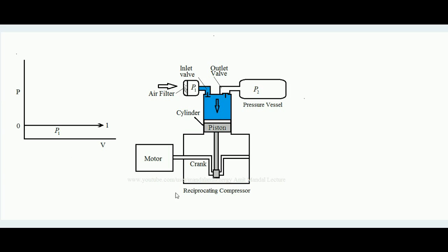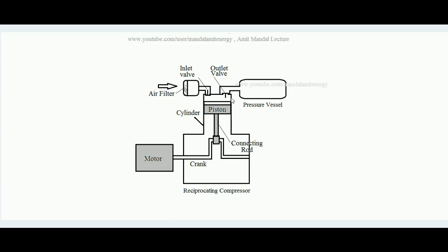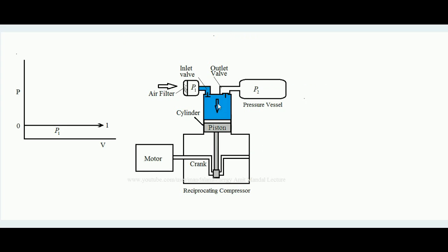This is the PV diagram of this process. Initially, when the piston is at the top dead center, the volume is set as datum zero — this is called the clearance volume. As the piston pulls air in, the volume inside the cylinder increases. At constant pressure p1 (the atmospheric pressure), air is pulled in and the volume increases from zero to v1, as shown on the PV diagram.